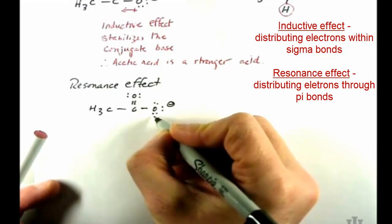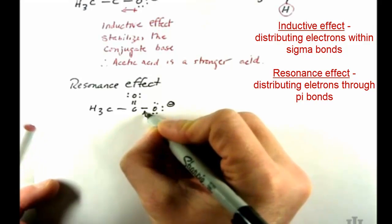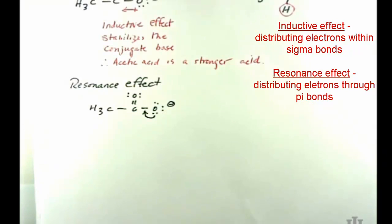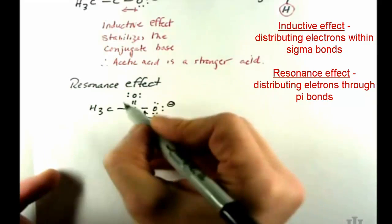And one thing we can do is we can draw a resonance structure of this molecule that allows us to reorganize the electrons and get a better picture of what acetic acid might really look like.